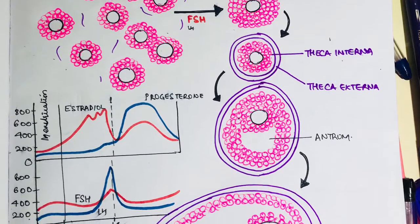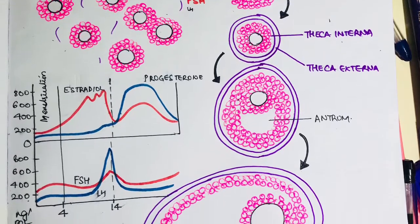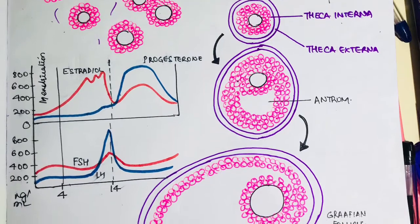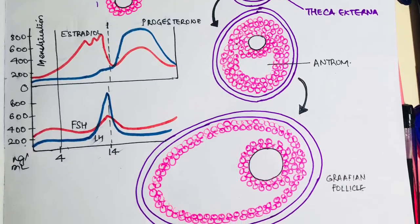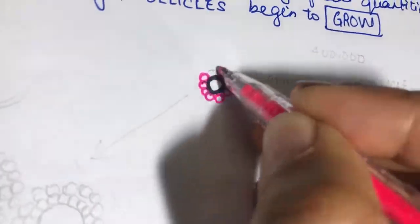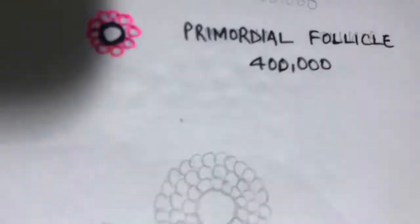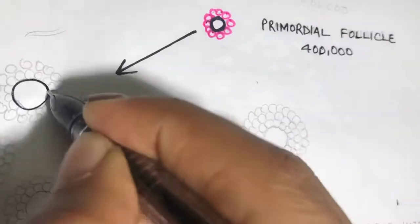At day 14, ovulation occurs. Now we're going to see what happens inside the ovaries during this period. With our knowledge of oogenesis, we know that when a girl is born, her ovaries contain about 400,000 primordial follicles.